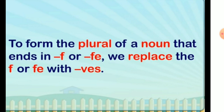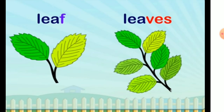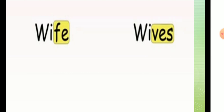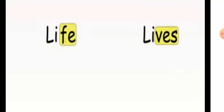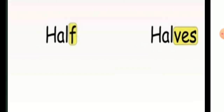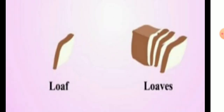For nouns that end in 'f' or 'fe', when we change to plural form, we replace the 'f' or 'fe' with 'ves'. So the plural form of 'leaf' is 'leaves' (L-E-A-V-E-S); 'wife' → 'wives'; 'life' → 'lives'; 'half' → 'halves'; 'knife' → 'knives'; 'loaf' → 'loaves'.